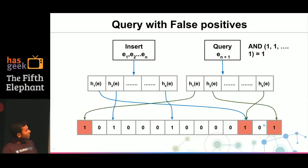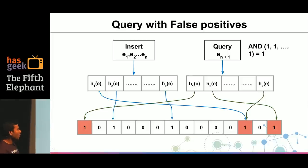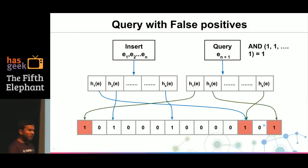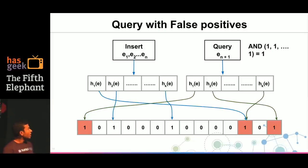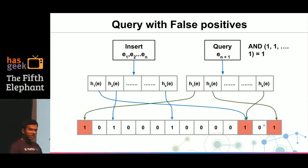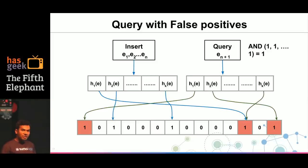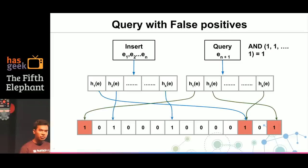For a query, when element e_{n+1} asks whether it is present, we apply the same hash functions, get the indices, fetch the values, and do an AND. If the AND returns 1, the value is present; if 0, it is not. However, it is quite possible that the previously inserted elements e1 through en have turned on all the bits that e_{n+1} would have set — this gives us false positives. But we can reduce the probability of false positives to such a small value that this data structure remains useful in many cases.